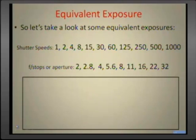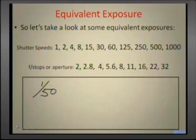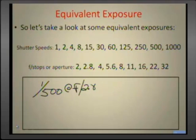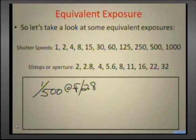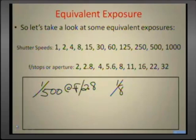Let's say that I have 1/500th of a second at f2.8. And I want to now — let's say I'm photographing at a river, and I want to do that water shot. To do that I have to use a slower shutter speed and put my camera on a tripod. So let's say I want to use 1/8th of a second for my shutter speed.